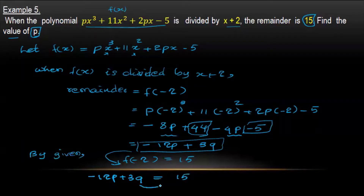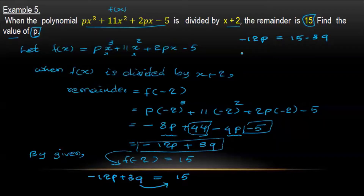Subtracting 39 from both sides: minus 12b equals 15 minus 39, which gives minus 12b equals minus 24. Dividing both sides by minus 12: b equals 2.